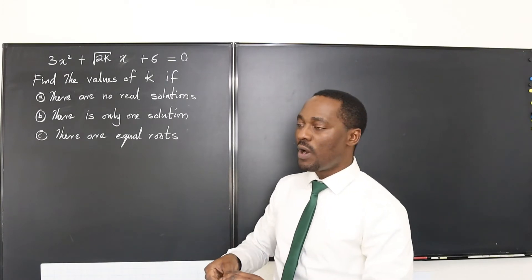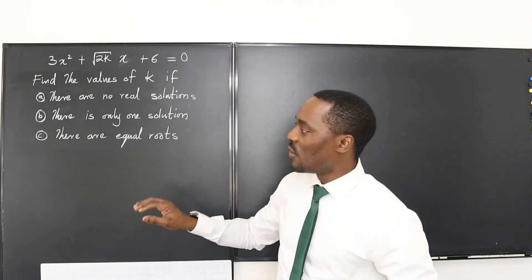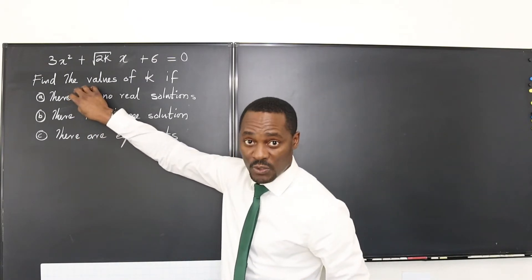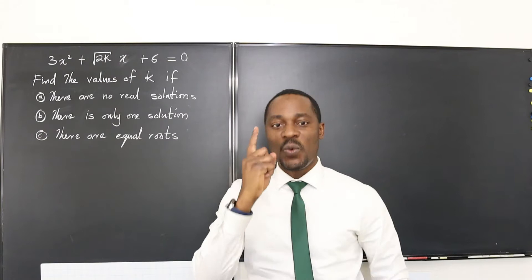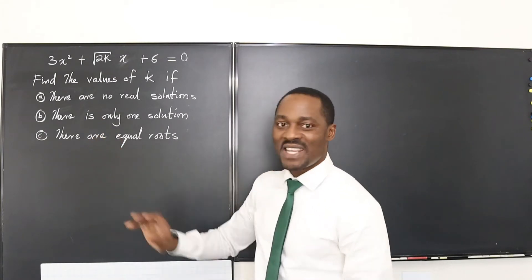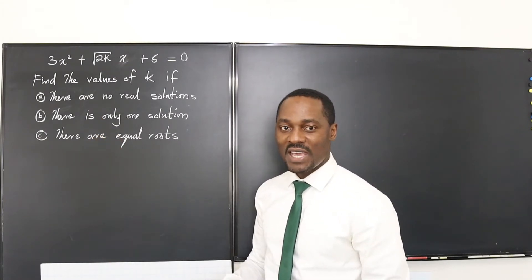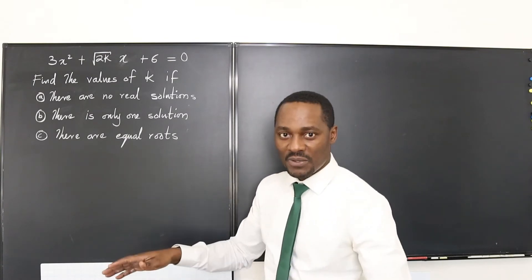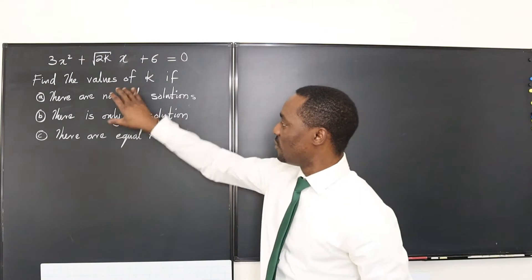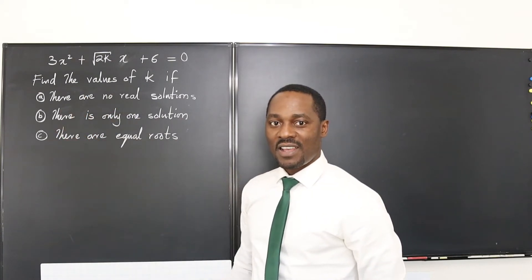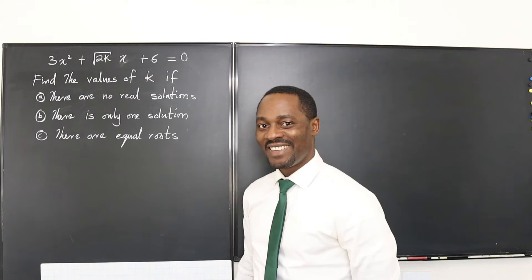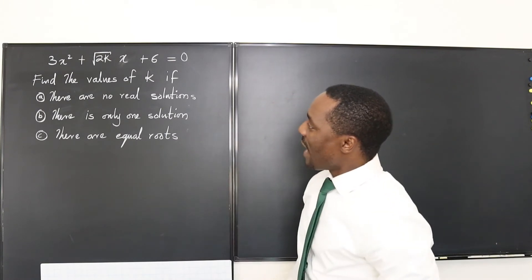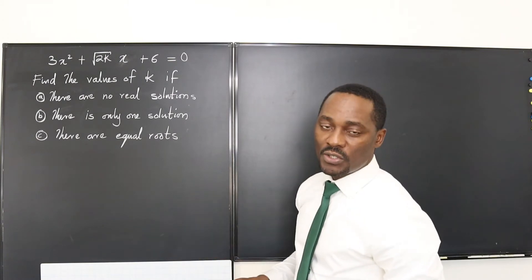So I want you to look at this question again and see that we only have two problems to solve. The first one is when there are no real solutions and the second one is when there's only one solution because this and this mean exactly the same thing. I put that there because that might confuse some people but now that's out of the way. Now let's deal with the first two because the third is as the second.